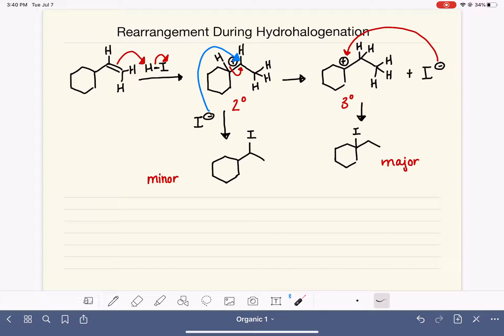Now, last but not least, with the formation of this minor product, notice that this carbon is chiral. We did make a chiral carbon right here.